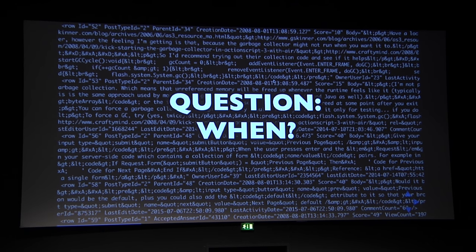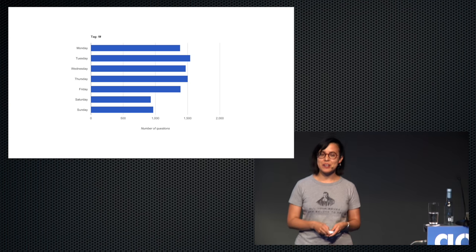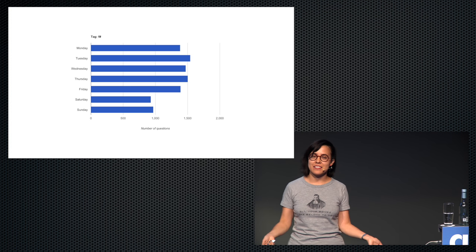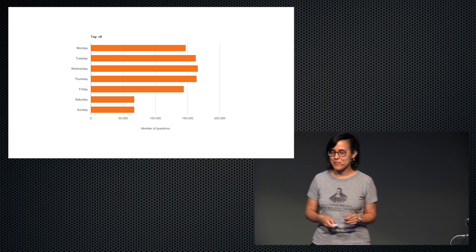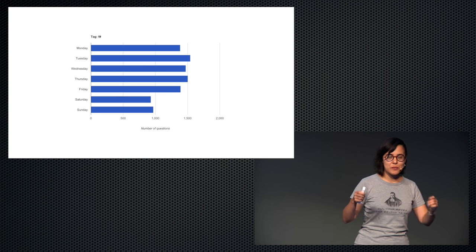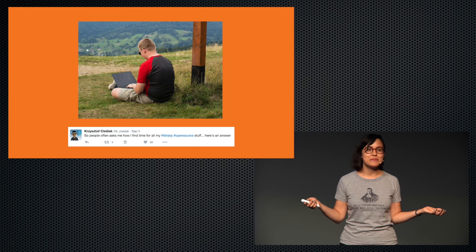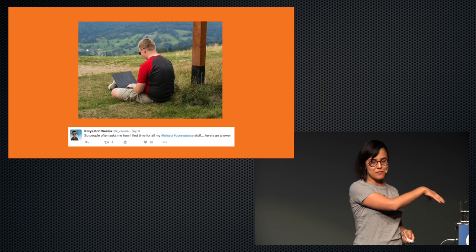So I asked: when do people ask or answer questions on Stack Overflow? I plotted it for F# since I was working in F#. You can see people ask and answer most questions Monday to Friday, then it drops on Saturday and Sunday. I also looked at C#, another language on the .NET platform, and it has a very similar pattern. But something caught my attention: the ratio between weekend and weekday is slightly different for C# and F#. More people ask questions about F# on weekends than C#.